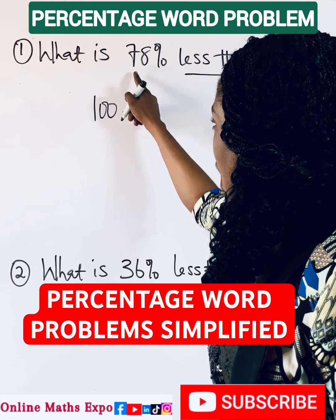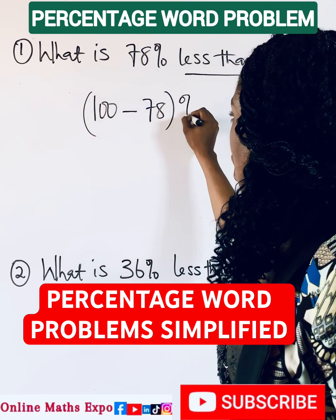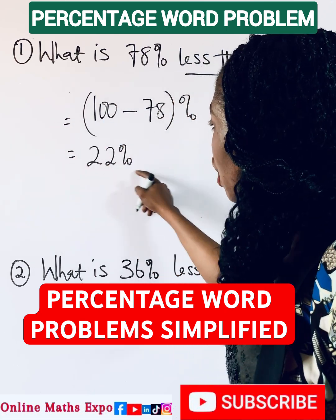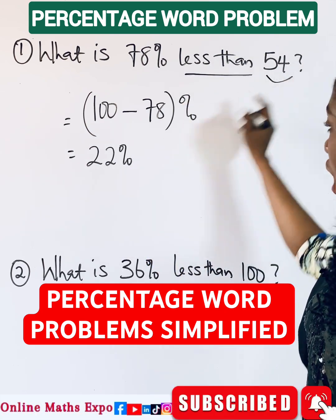You subtract the 78. So when you subtract this, it gives you 22%. So you are going to take 22% of this value.